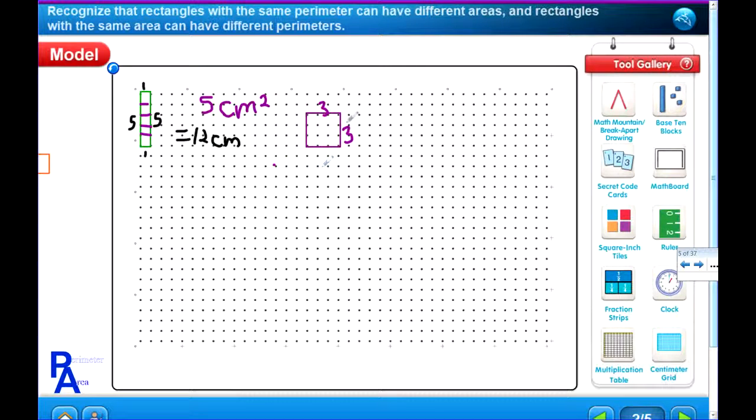What's the area? 3 times 3 is 9. So the area equals 9 centimeters squared.